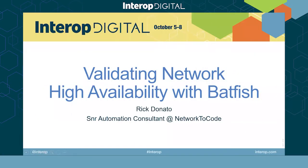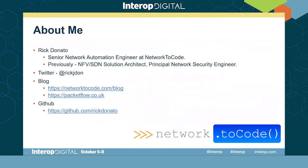Hi, welcome to this talk around validating network high availability with Batfish. I'm Rick Donato, I work as a senior network automation engineer at Networks to Code, and previously worked within the NFV and SDN space, as well as the network security space. You can find me on Twitter at rickj, and I'm an avid blogger at the Networks to Code blog and my own blog packetflow.co.uk. Much of my code is available at the GitHub repo shown.